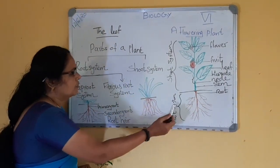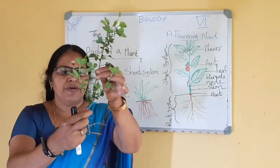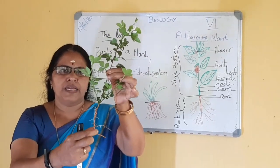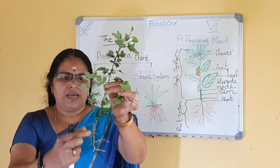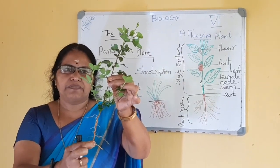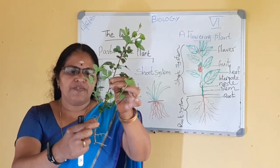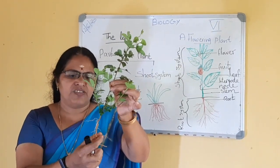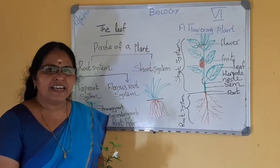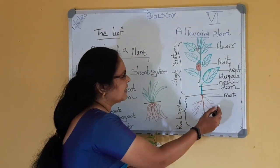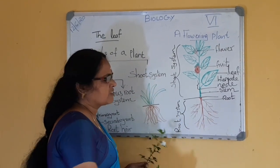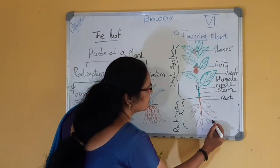When we observe the root system, you can see there is a main root that grows downward. That main root is called the primary root. When a seed germinates, the root grows first and forms the primary root. From the primary root arise many branches called the secondary roots. From the secondary roots arise many more branches, and finally the small hair-like structures called root hair.